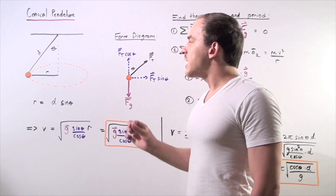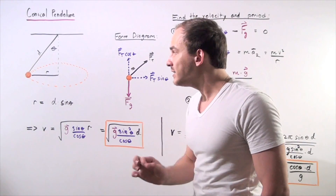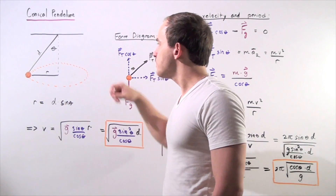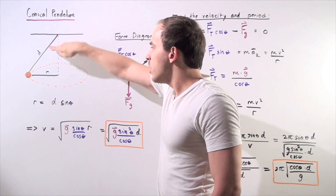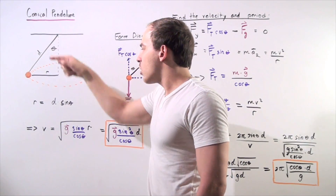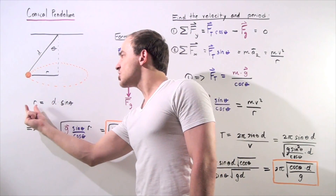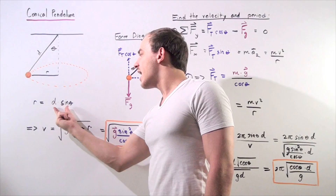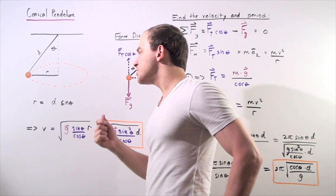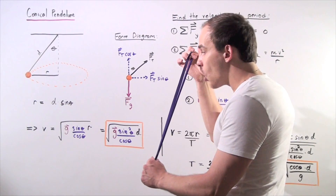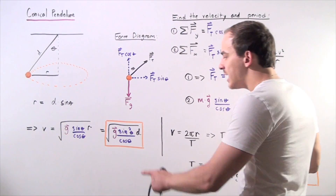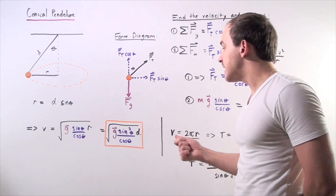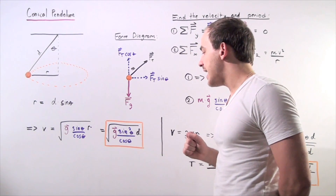If we want the formula in terms of rope distance d rather than radius r, we use the trigonometric relationship: sine of theta equals r divided by d, so r equals d times sine of theta. Substituting, velocity equals the square root of g times sine squared of theta times d, divided by cosine of theta.